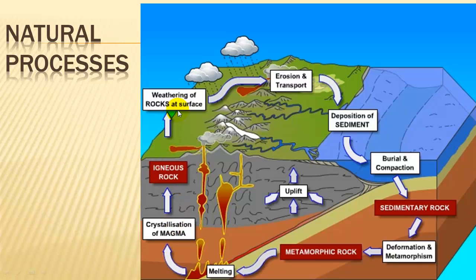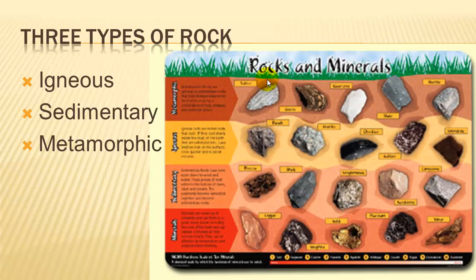When that igneous rock gets to the surface, it can be weathered, eroded, transported, and deposited as sediment. When that sediment is buried and compacted over a long period of time, it forms sedimentary rock. If that sedimentary rock is carried deep within the earth, deformation and metamorphism occur under very high heat and pressure. When that metamorphic rock is uplifted, we can see it at the surface. If it continues to be carried down into the deep earth, it remelts, forms magma, and starts the cycle all over again.